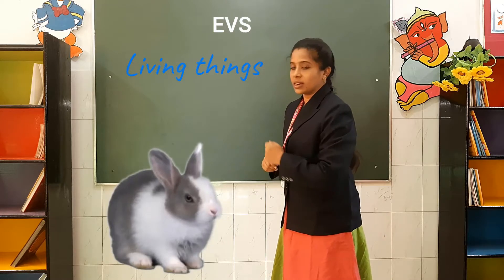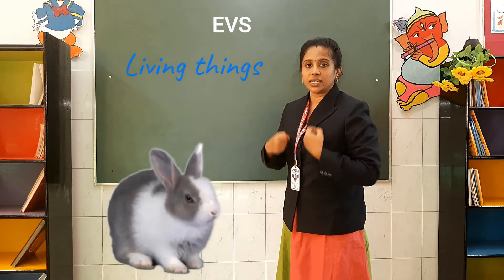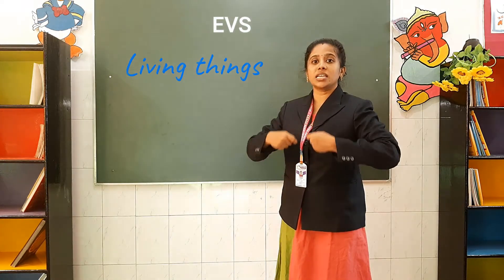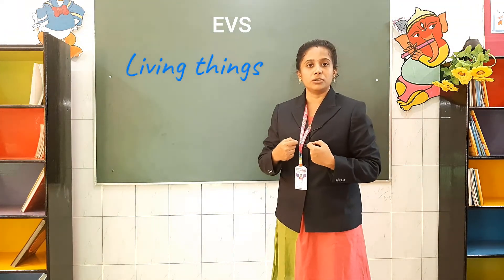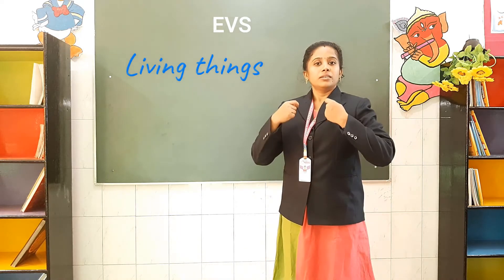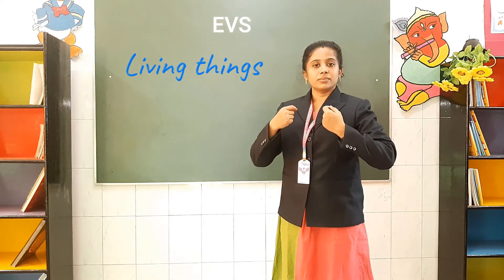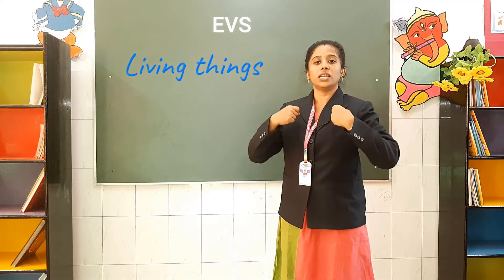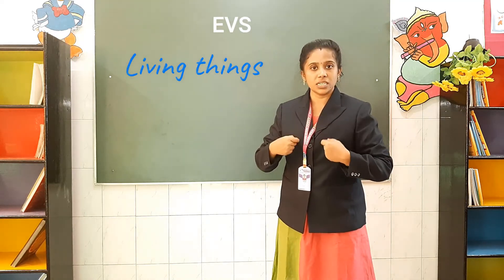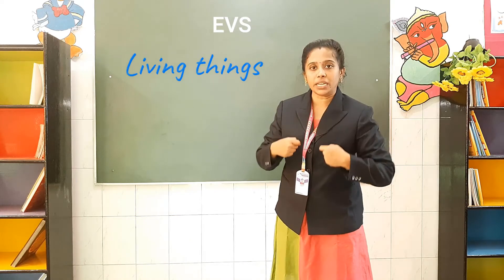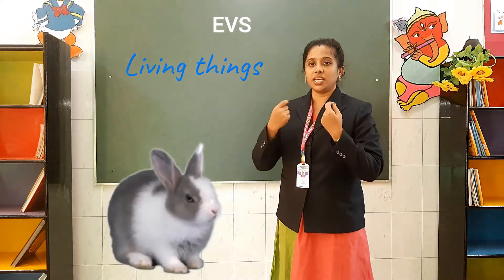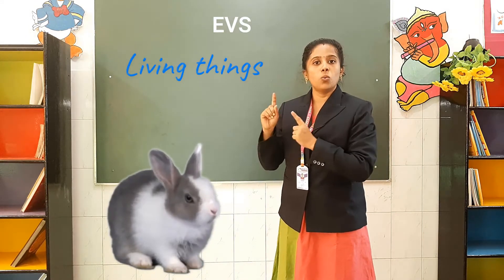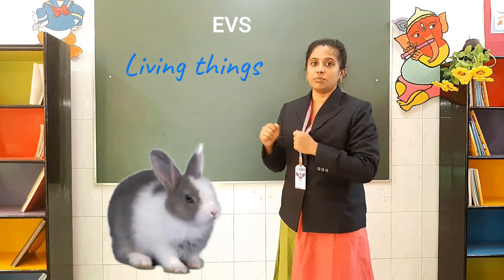Next, this rabbit is breathing. What is it doing? Breathing — respiring. What do we do when we breathe? We breathe in and breathe out. So we breathe in and out. Only living things can breathe.